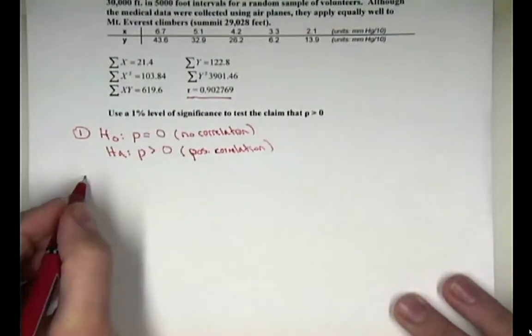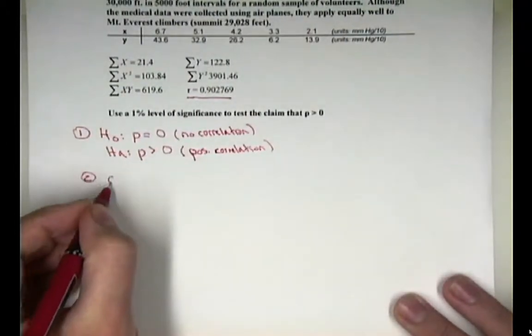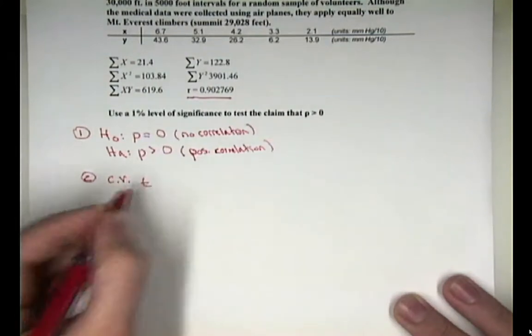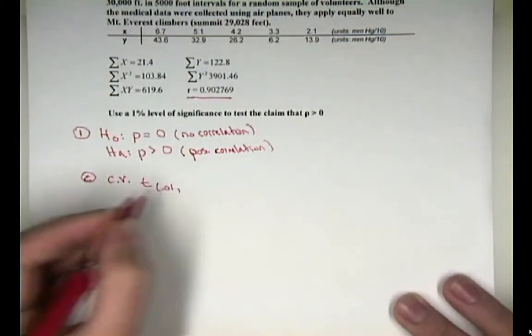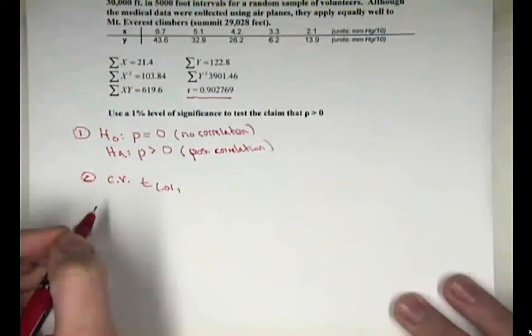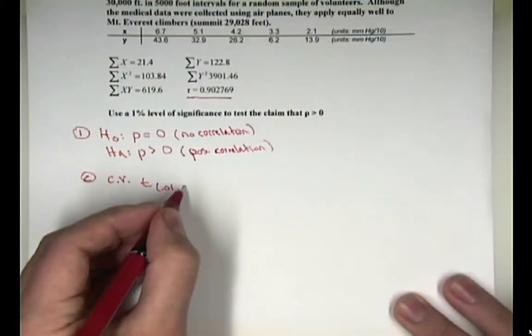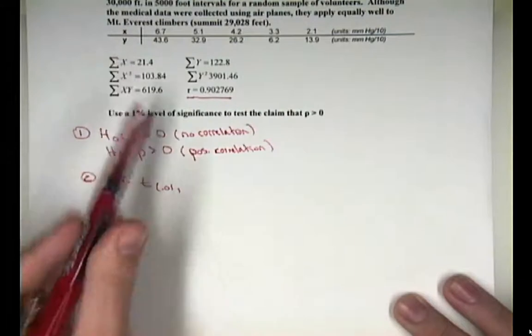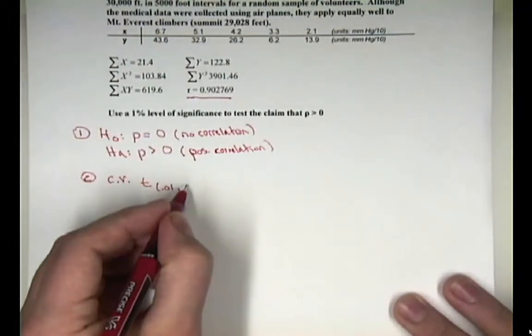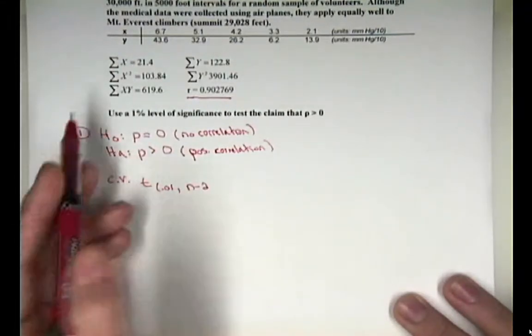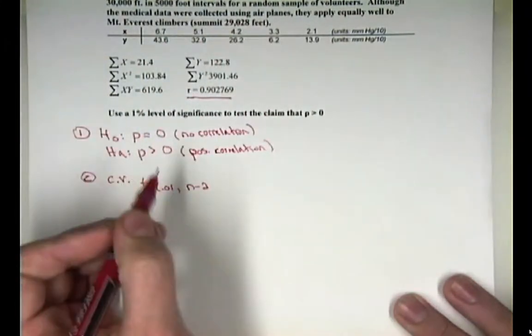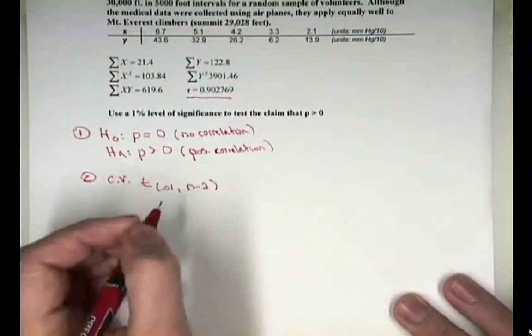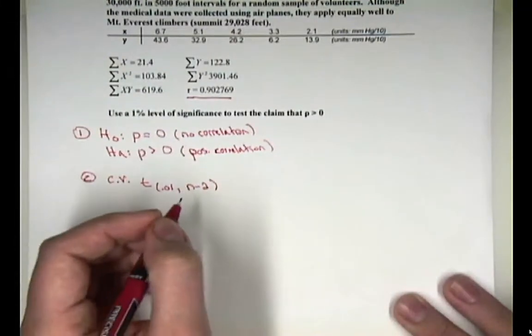Step two in the critical value method is to, of course, look up your critical value. We need to use a t with .01 level of significance. And degrees of freedom is n minus two because we've got two variables going on. So we're going to do n minus two. n is five. One, two, three, four, five samples were taken. So we'll have, in other words, three degrees of freedom.